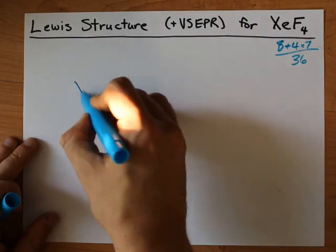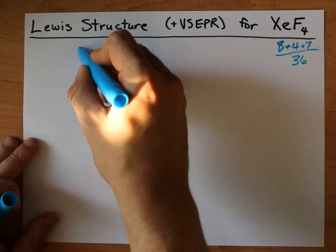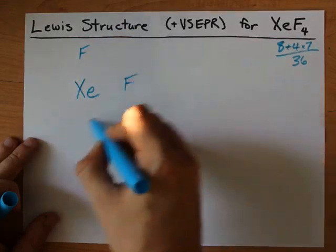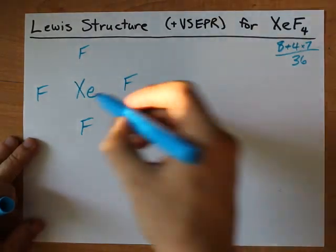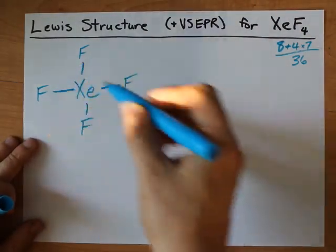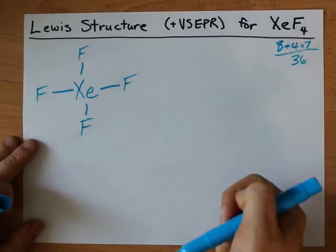I like to put my central atom in the center, and then put all of the outer atoms around it. That's my 4 F's. Then I make single bonds to the central atom. That accounts for 8 electrons, by the way.